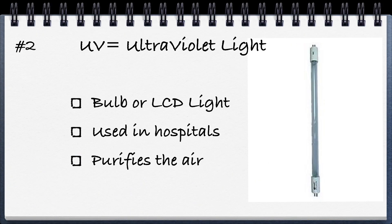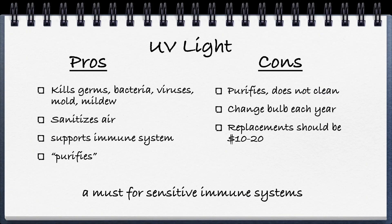Next is UV light, which comes as either a bulb or now LCD lights. Used in hospitals to purify the air. Pros: kills germs, bacteria, viruses, mold, and mildew; sanitizes the air and supports immune systems. It purifies rather than cleans. Cons: it purifies but doesn't clean; you have to change the bulb each year, and replacement should cost $10 to $20.